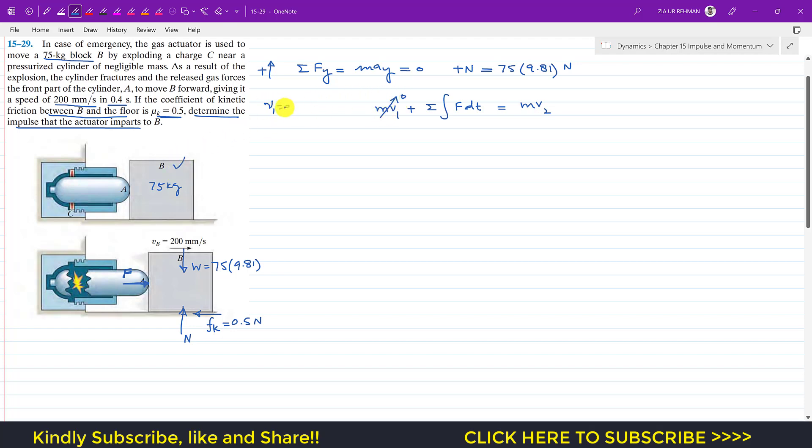Initially, block B is at rest, so v1 is 0. We are applying this impulse principle in the horizontal direction, and this is our positive direction. Force F is acting in the positive direction, so the impulse due to F will be integral of F dt.